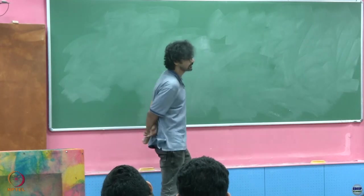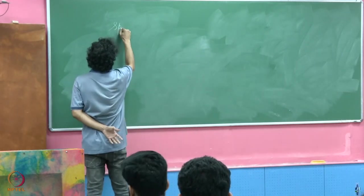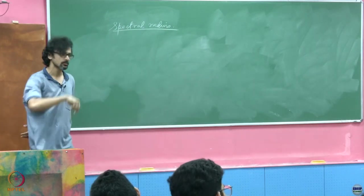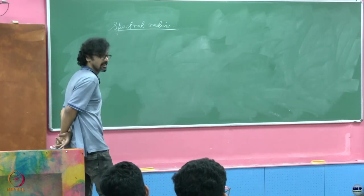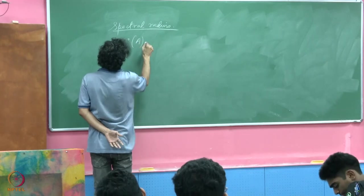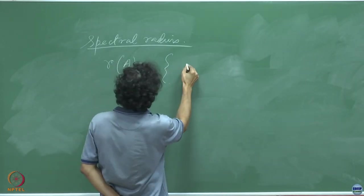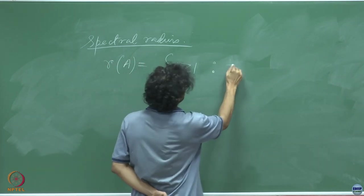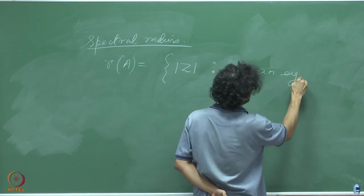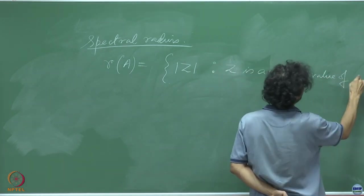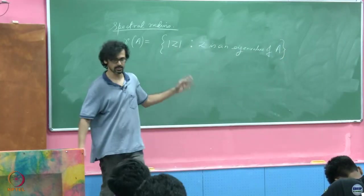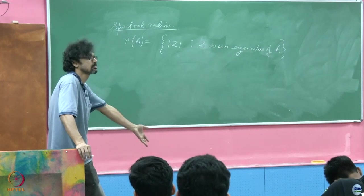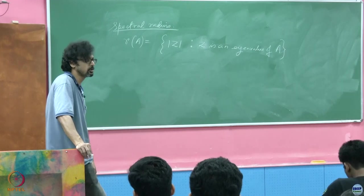Before going into that, another general notion is the so-called spectral radius of a matrix. The spectral radius of A is defined as max |z| where z is an eigenvalue of A. Note that the spectral radius need not itself be an eigenvalue, because it is always a real number — a radius — whereas the eigenvalue with the largest absolute value may be complex.